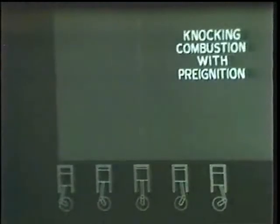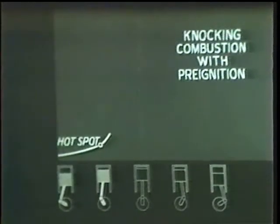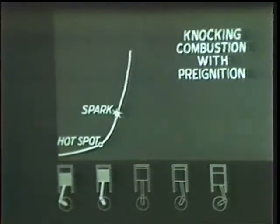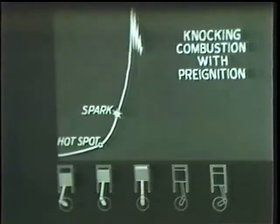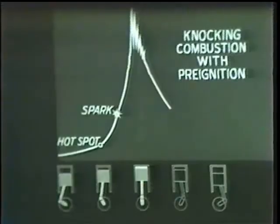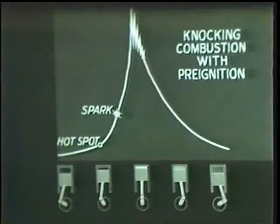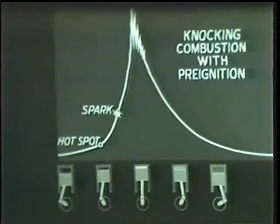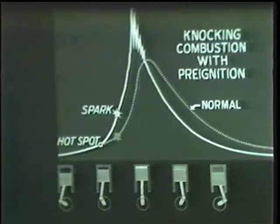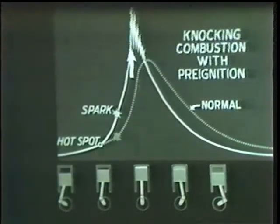Now let's look at the graph for this kind of combustion. Pre-ignition by the hot spot causes the pressure to rise rapidly and very early. Ignition by the spark increases the pressure further. Knocking again occurs when the temperatures and pressures get too high for the anti-knock value of the fuel being used. Pre-ignition has the effect of advancing the timing to such a great extent that the peak pressure occurs before the piston has reached the top of the compression stroke.